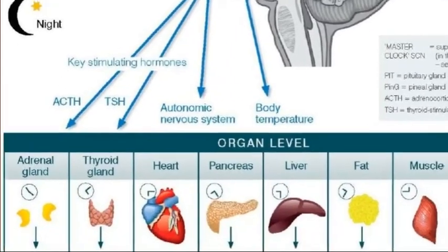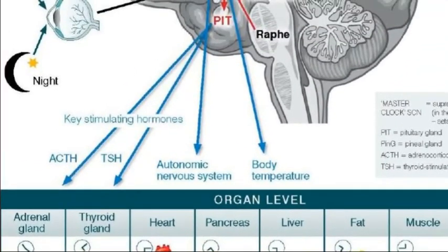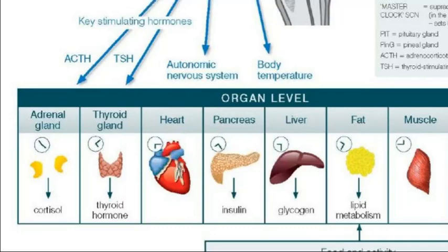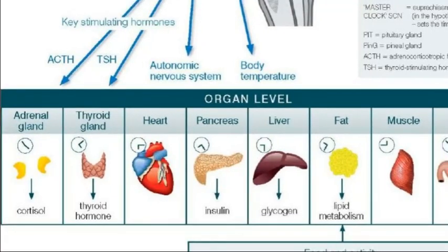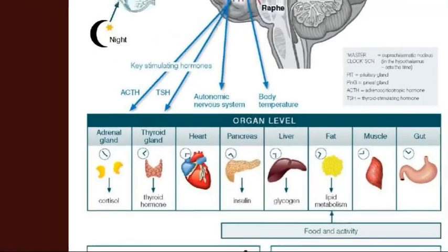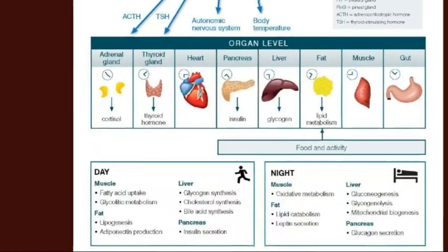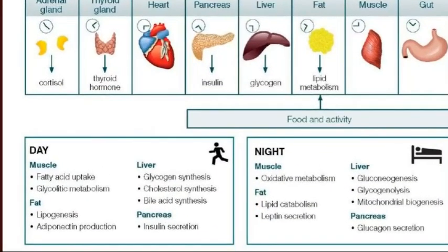The suprachiasmatic nucleus sends messages to all of the clocks in the rest of the body using body temperature, hormones, and other messaging forms. This sends messages to various organs, systems, and indeed to every cell in the body — each cell has a molecular clock inside it, enabling it to do the right thing at the right time. Our bodies can't do everything simultaneously; we have to conserve energy and organize properly — it's like a massive project management operation.